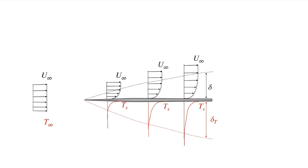If we consider a flow impinging on a flat plate which has a temperature of Ts compared to the temperature in the flow of T infinity, the flow impinging on the plate has a velocity of u infinity.